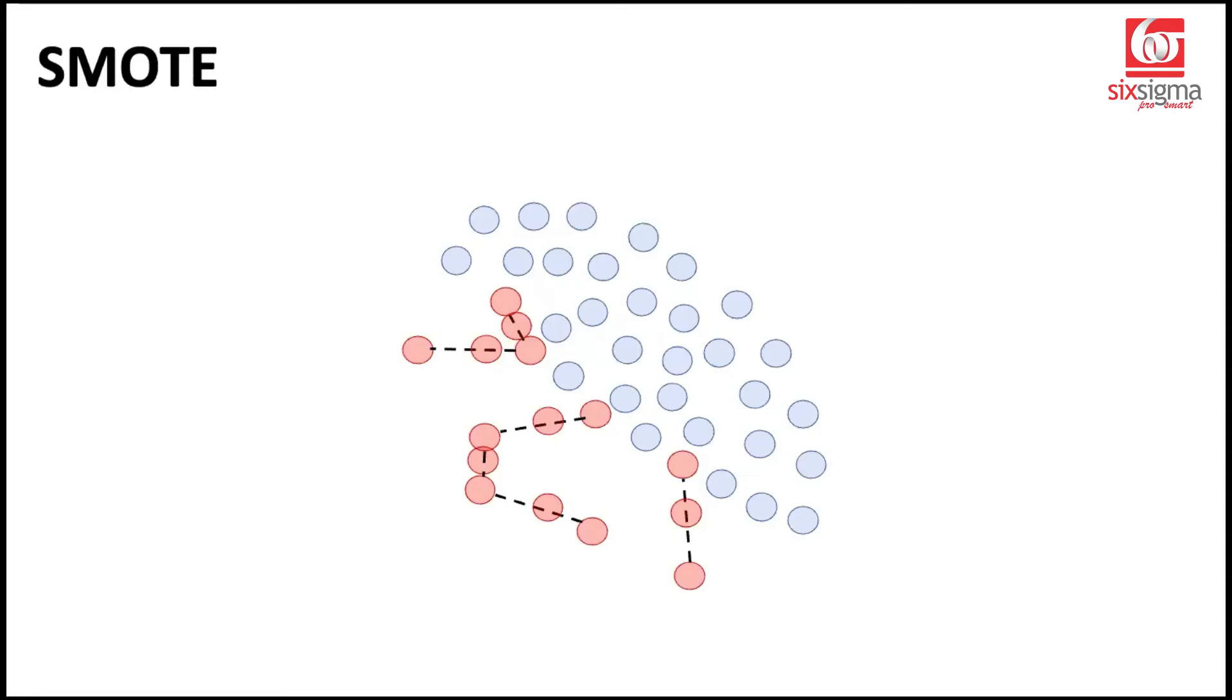Now, as I said, SMOTE is a very popular oversampling technique, and there are many variants of SMOTE. So there are variants of SMOTE like borderline SMOTE, SVM or support vector machines based SMOTE, K-means SMOTE, and many other variants.